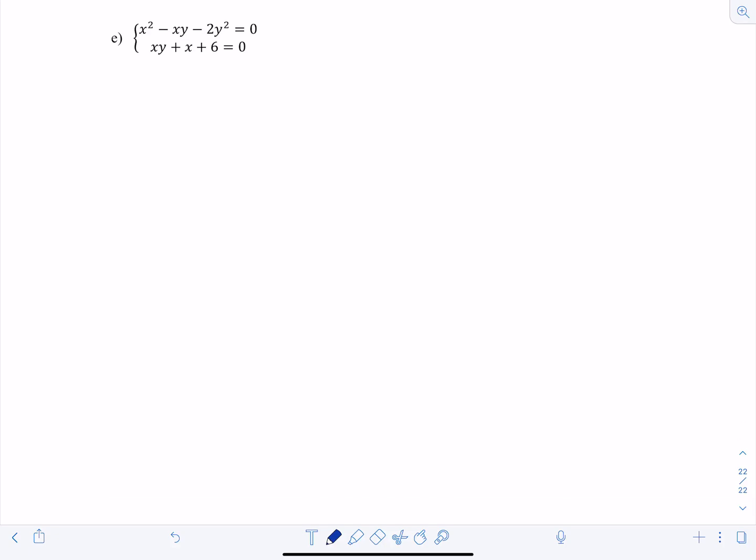Last example. Here we go. So we have x squared minus xy minus 2y squared is zero. And then xy plus x plus six equals zero. So I don't know, maybe the first thing that jumps out at you is, oh, I want to add them together, cancel out that xy. So let's see what would happen if you did that. Let's add them together. So you would get x squared, then these would cancel, then you'd have plus x minus 2y squared plus six is zero. And then from there, what in the world do you do? You have two variables. That's not a good situation.